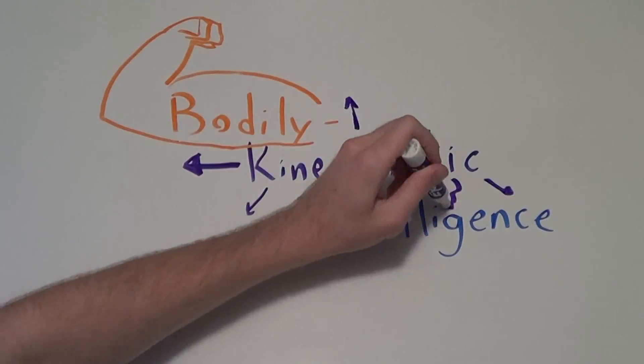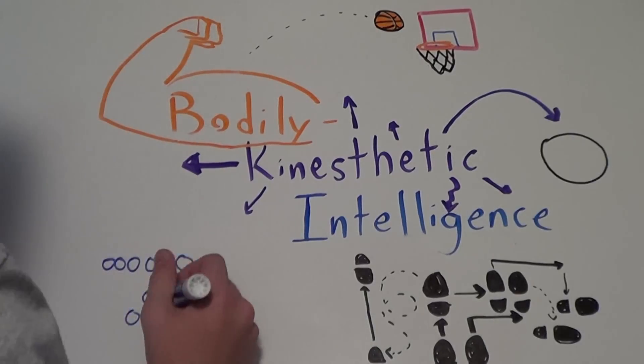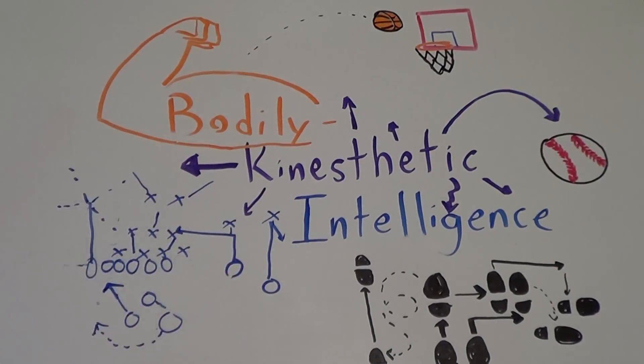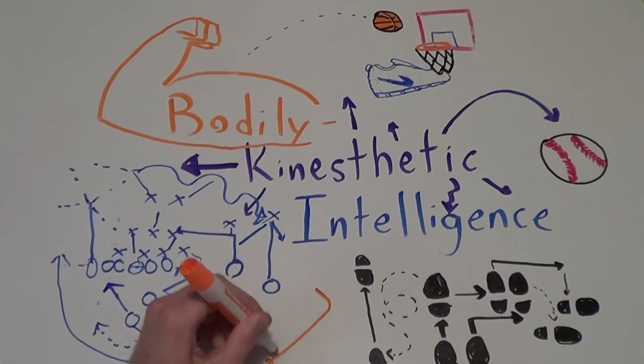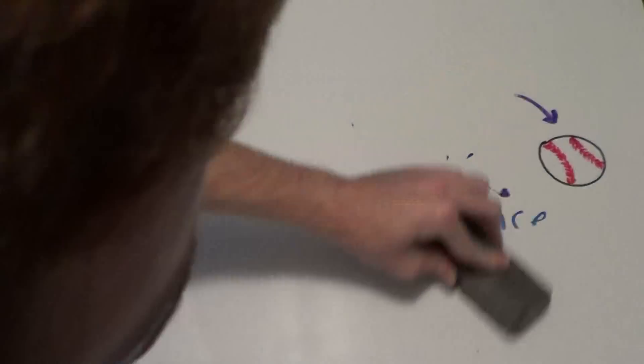Bodily kinesthetic intelligence encompasses a wide variety of talents, involving the capacity to manipulate objects and use a variety of physical skills, a sense of timing, and the perfection of a mind-body union. Body-smart people include Charlie Chaplin, Tim Tebow, and Michael Jordan.